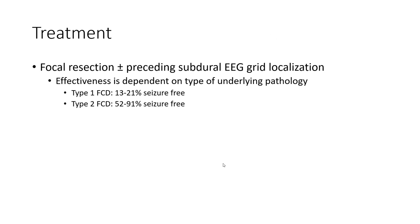Treatment: focal cortical resection plus intraoperative structural EEG grid for localized seizure focus. Type 2 focal cortical dysplasia shows approximately 91–92% seizure freedom following resection.